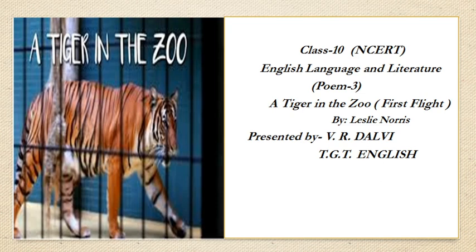This poem contrasts a tiger in the zoo with the tiger in its natural habitat. The poem moves from the zoo to the jungle and back again to the zoo. Read the poem silently once and say which stanzas speak about the tiger in the zoo and which ones speak about the tiger in the jungle.